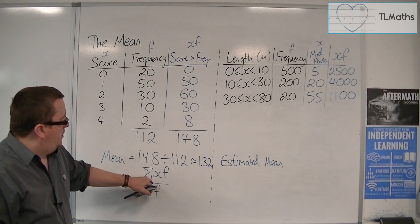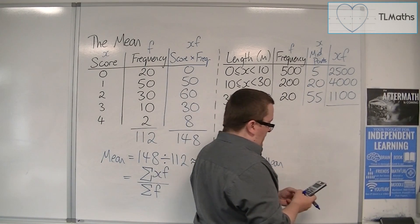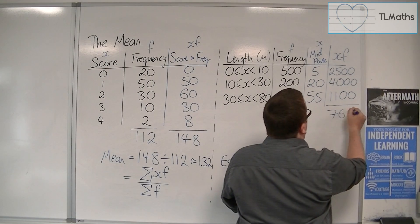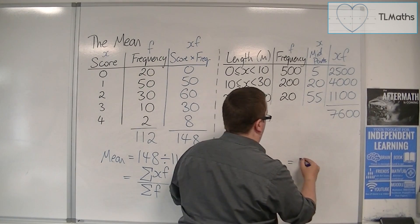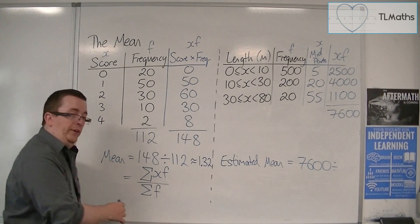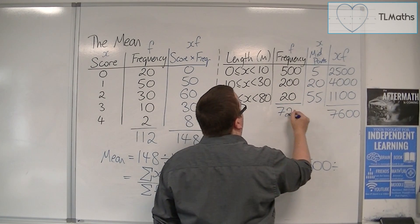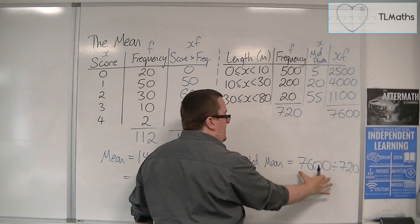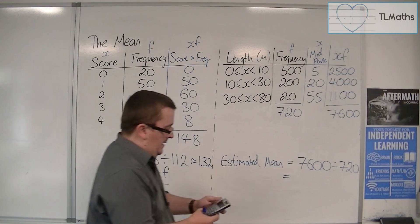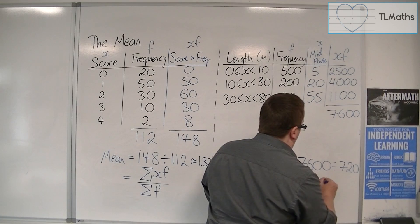Now, the formula says that I've got to add up all the xf's. So I've got to add up that final column. So we have 2,500 plus 4,000 plus 1,100. So 7,600. And I need to divide that by the sum of the f's, or the frequencies added together. So 500 plus 200 plus 20 is 720. So I need to find 7,600 divided by 720. So I do that on the calculator, and that gets me roughly 10.6 to one decimal place.